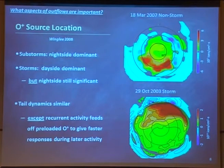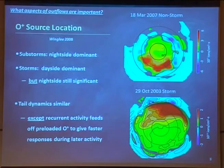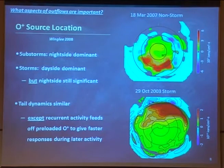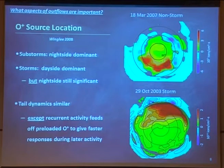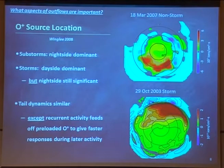The outflow source location is also an important factor in determining how the system responds. Some work from Robert Winglee studied substorm response in one case and storm response in another, and the locations and distributions of the outflow are quite different depending on how the system is activated. As the previous slide showed, depending on where that outflow emerges from the ionosphere, that determines how it impacts the magnetosphere.